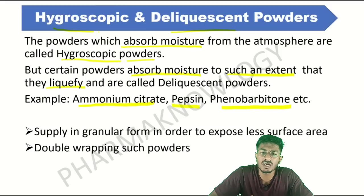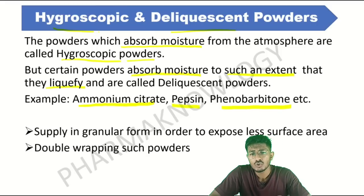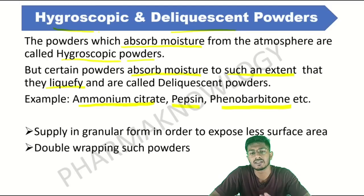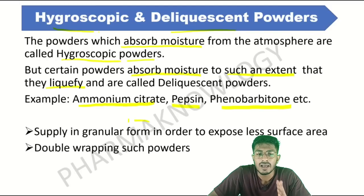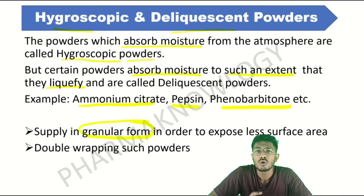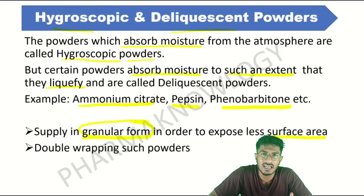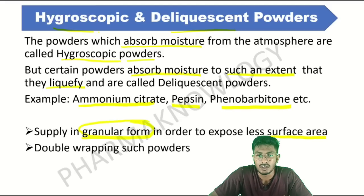These are some examples you can remember by name. This is a problem in powder dispensing. To overcome it, hygroscopic or deliquescent substances can be dispensed in granular form. In granular form, they will have less surface area because of the increase in size compared to powdered particles, so this problem can be tackled.